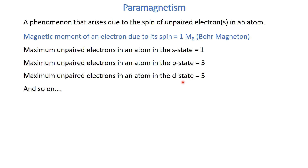The D state can accommodate ten electrons, and the maximum number of unpaired electrons could be five. It is not necessary that the P state will always have three unpaired electrons — it could have one, two, or a maximum of three. Similarly, the D state could have one, two, three, four, or a maximum of five unpaired electrons. For the F state, the maximum number of unpaired electrons is seven.